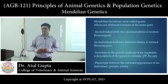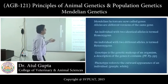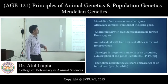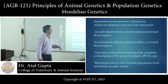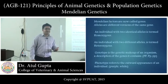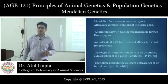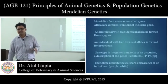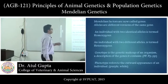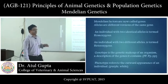Before going to Mendelian principles, some important terms should be known for better understanding of Mendelian inheritance. Mendelian factors are now called genes. Alleles are different versions of the same gene — they are the alternative forms of the same gene.